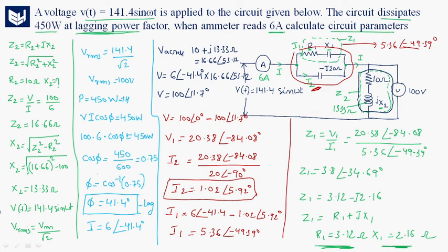So these are the unknown parameters: R1, X1, and X2. Thank you.